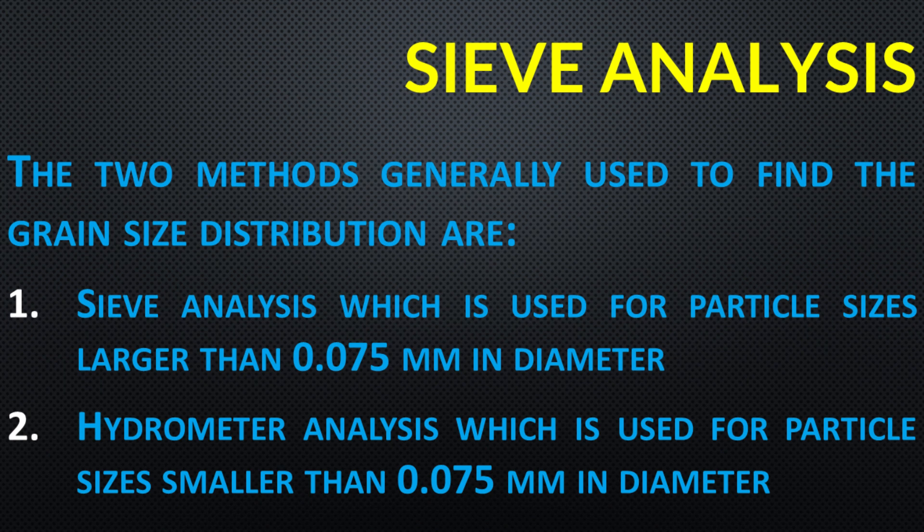The two methods generally used to find the grain size distribution are sieve analysis, which is used for particle sizes larger than 0.075 mm in diameter, and hydrometer analysis, which is used for particle sizes smaller than 0.075 mm in diameter.